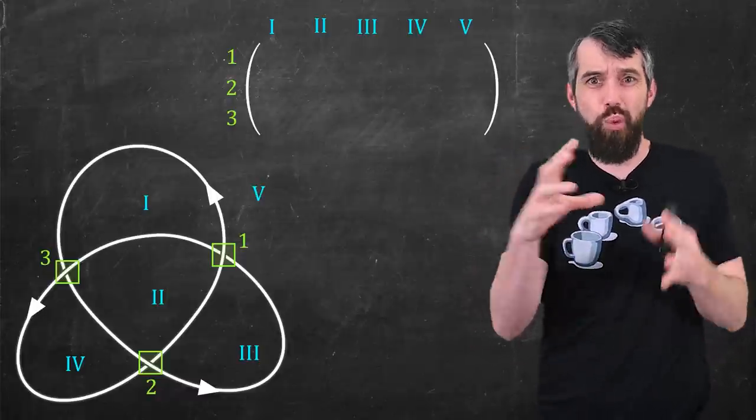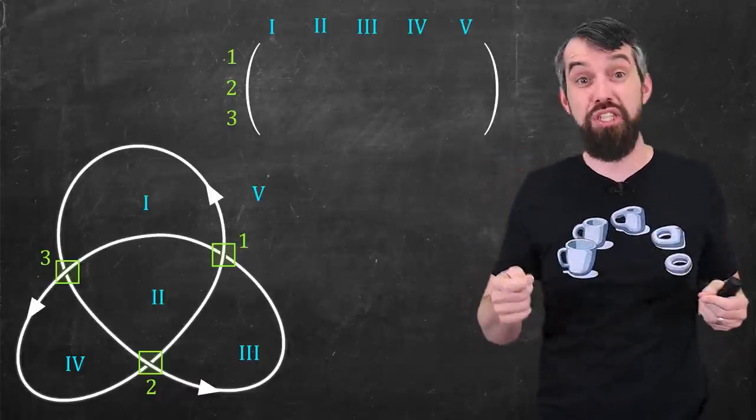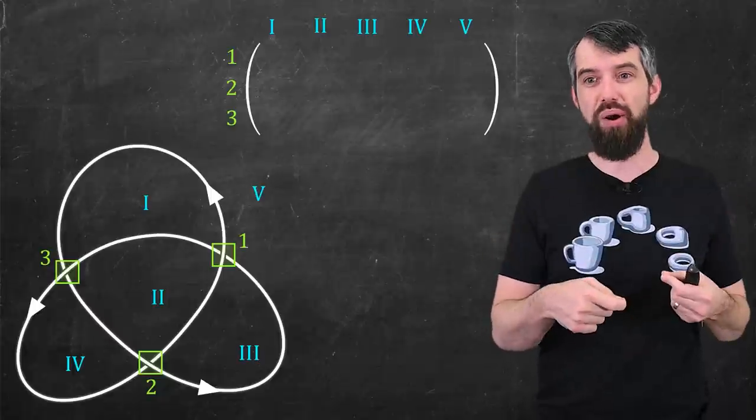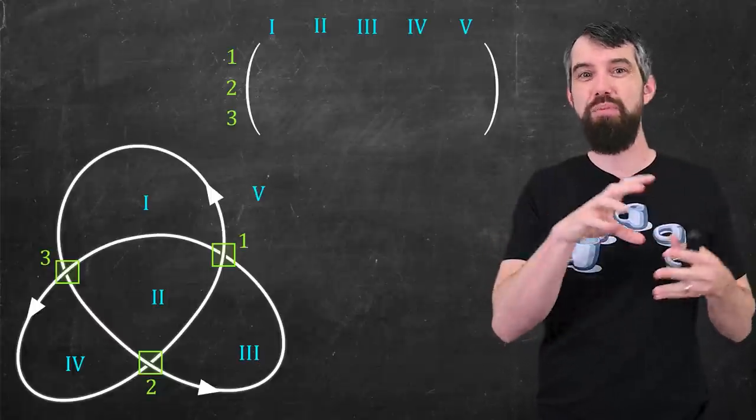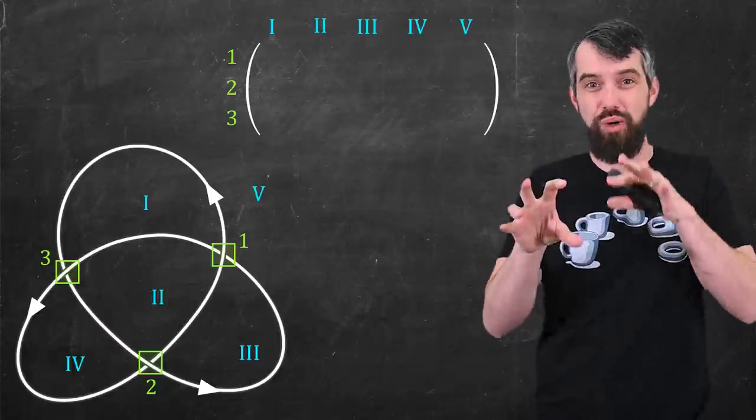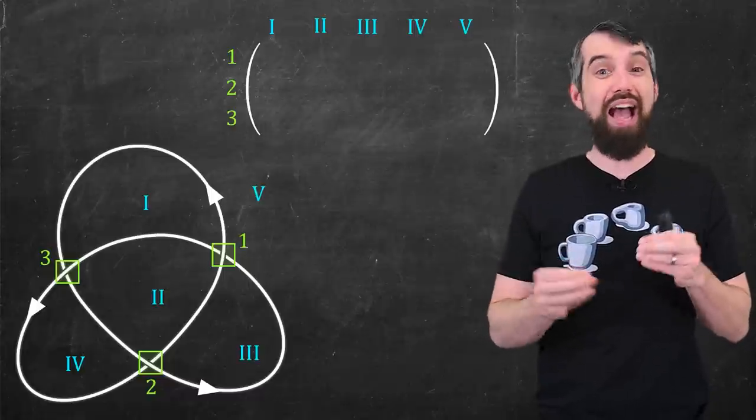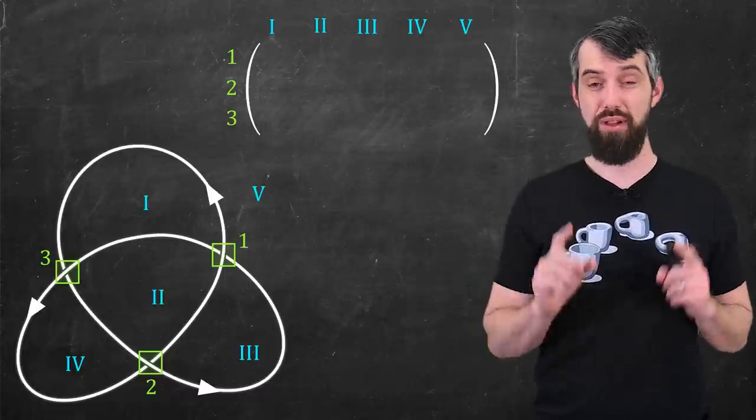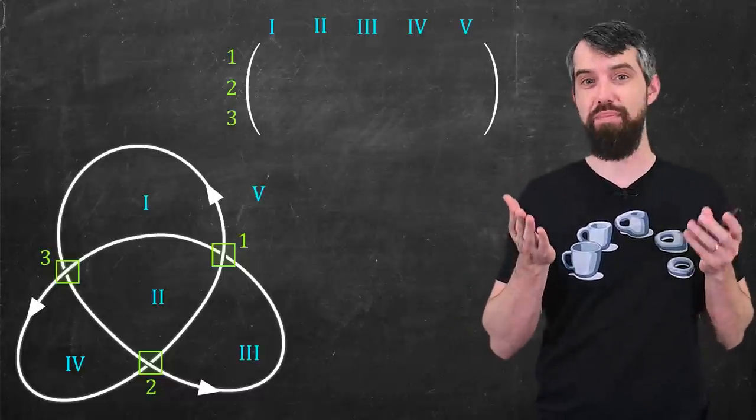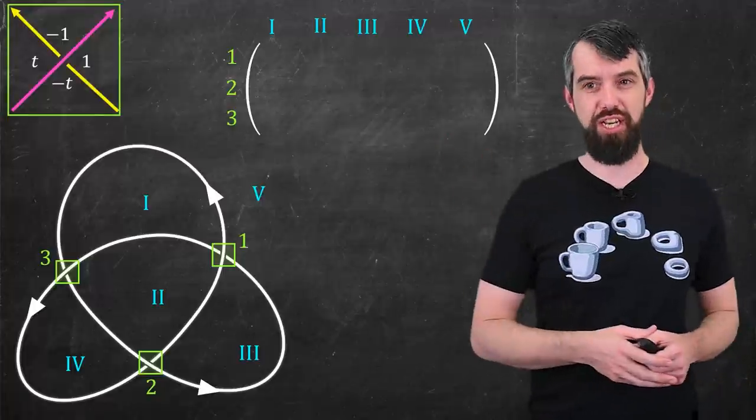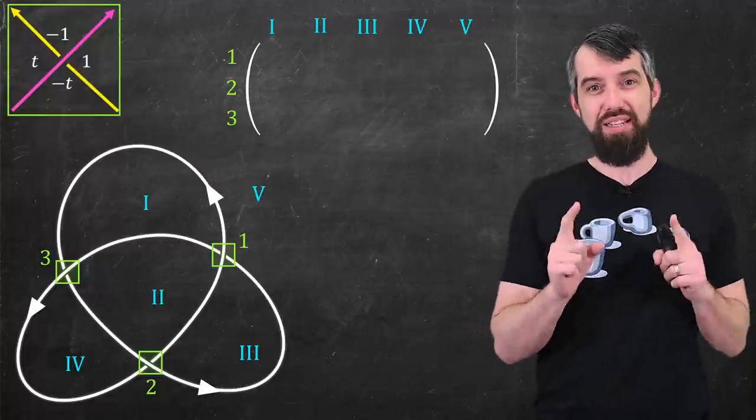And it's nice because if I wiggle my knot around, you know, maybe that region 1 gets bigger or smaller, but because I'm sort of dealing with the combinatorics of how the regions relate to each other and the crossings, that kind of change is going to be okay. Okay, so how should I fill in my matrix?